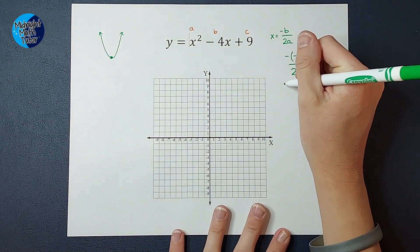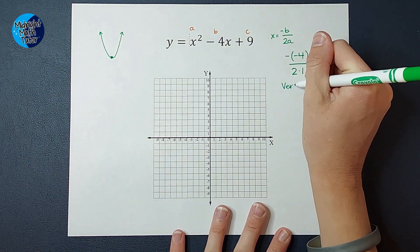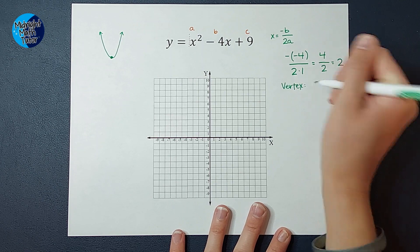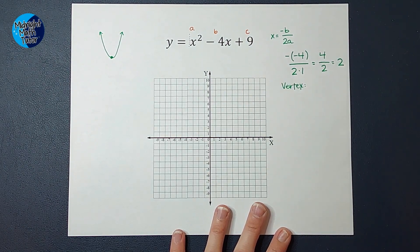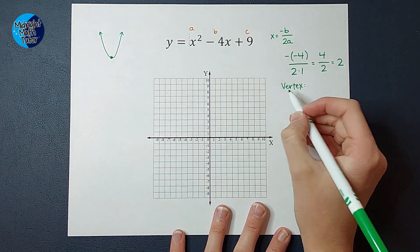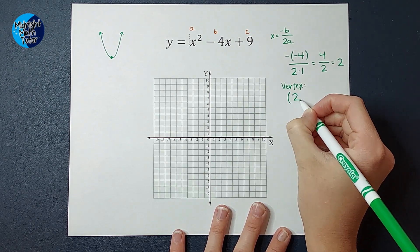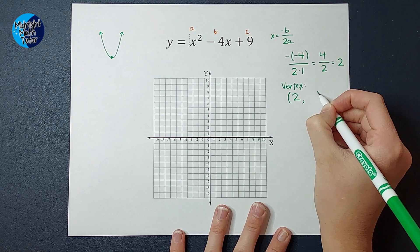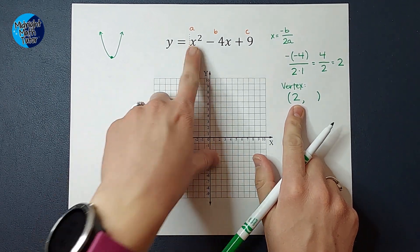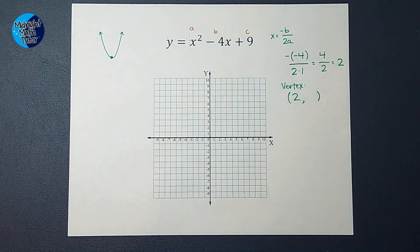So for my vertex, we're looking for an ordered pair, right? The x value in this coordinate is 2. So now how do we find the y? We're going to plug that 2 in for x and see what we get.